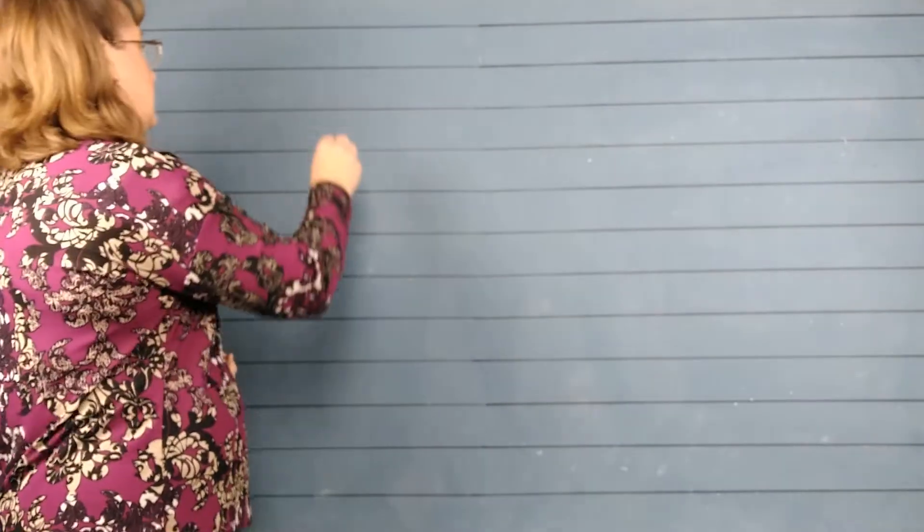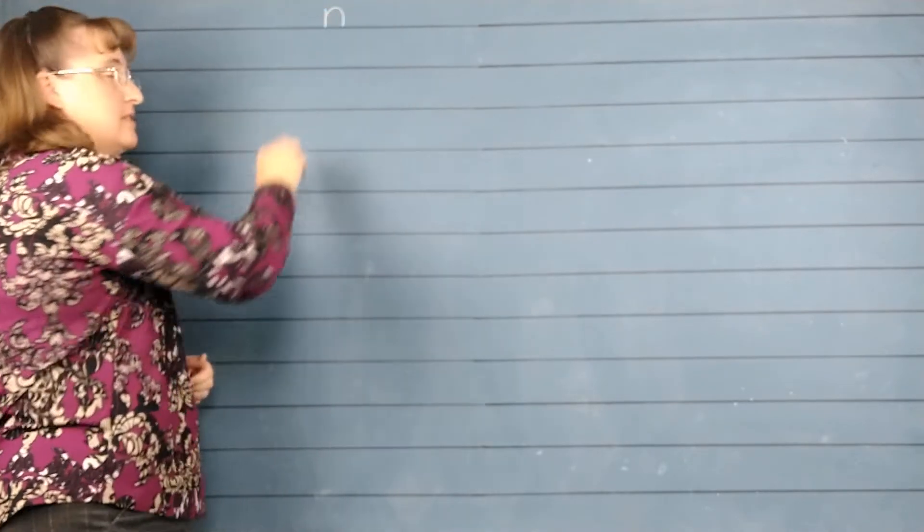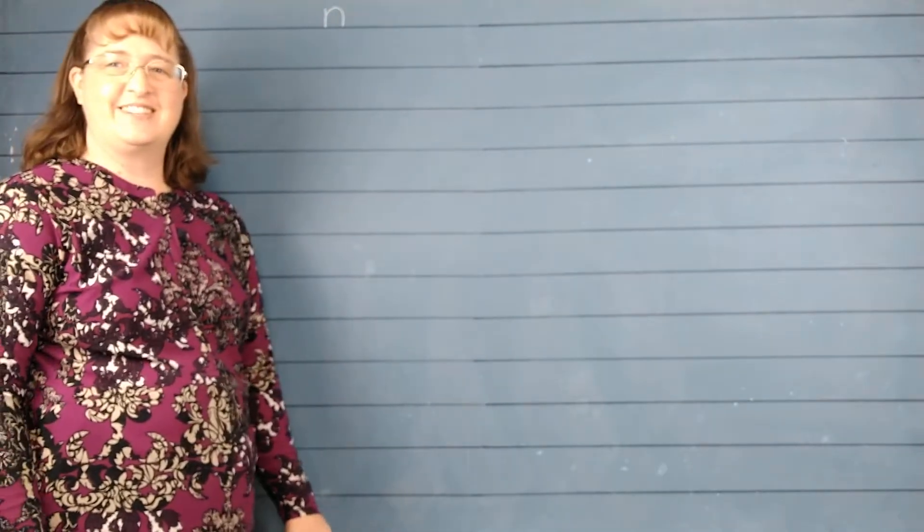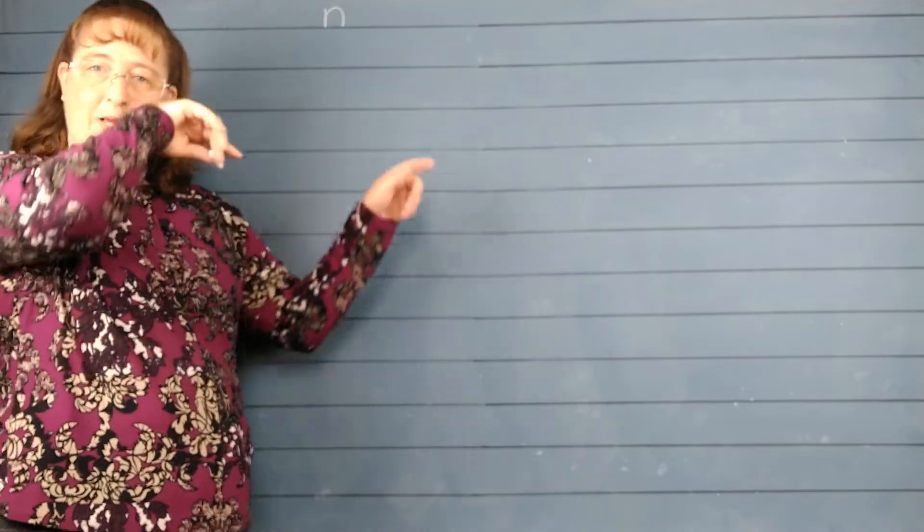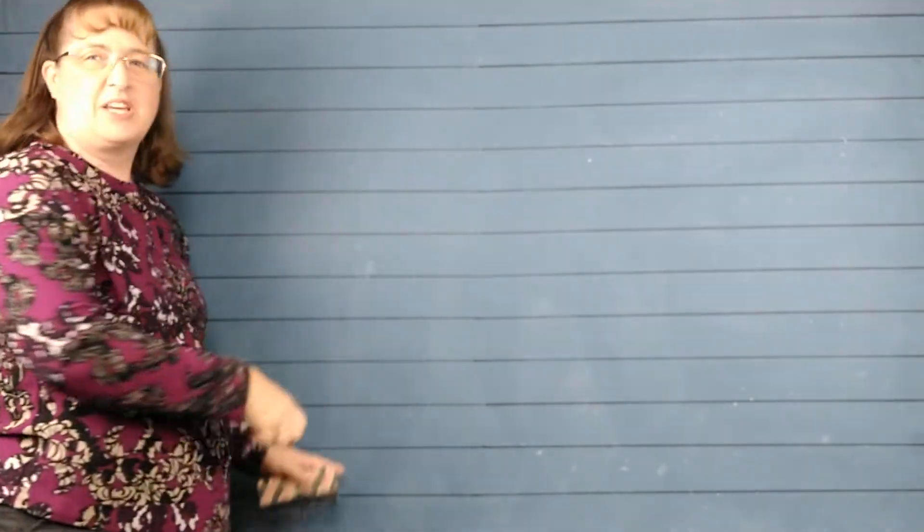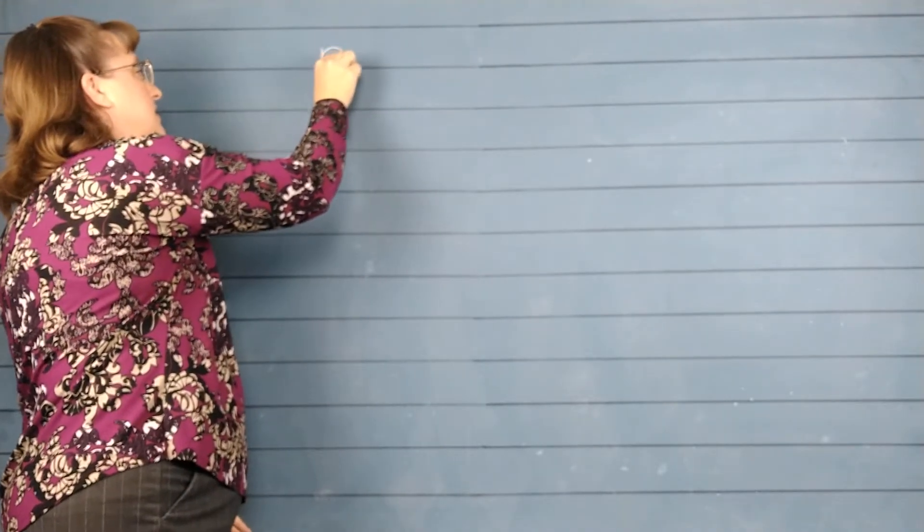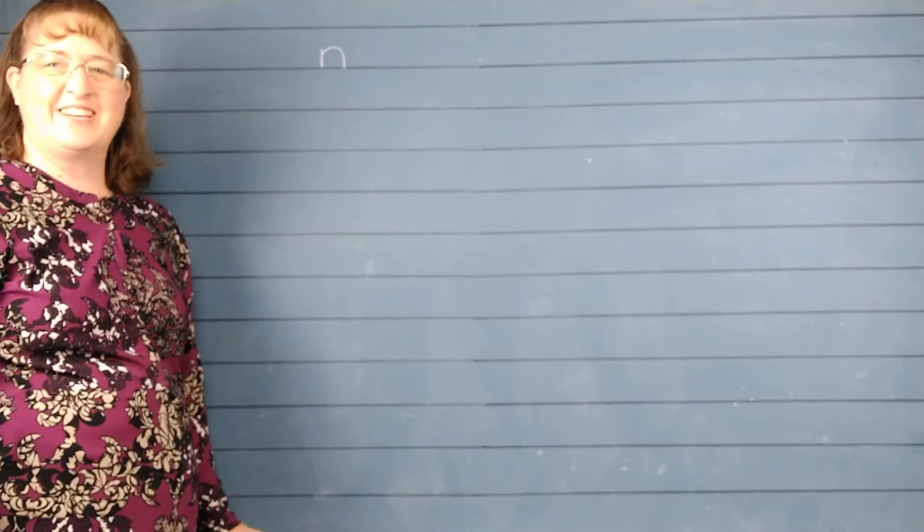The first letter is N. You write N on your paper. N. Good. Now let's make sure yours looks like mine. I'm going to move mine down just a little bit so you can see it really well.